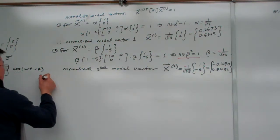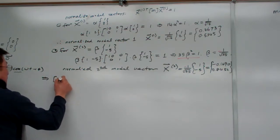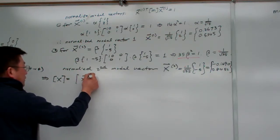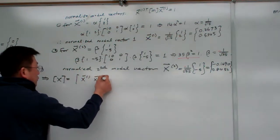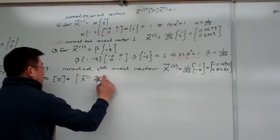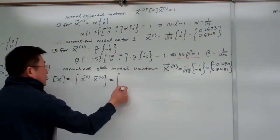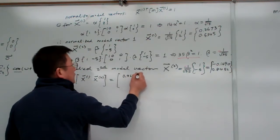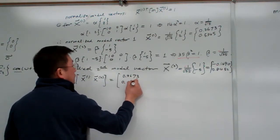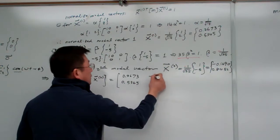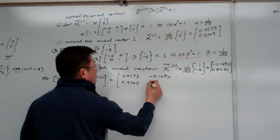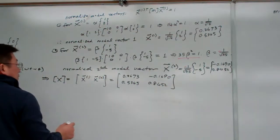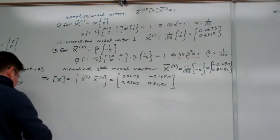So, therefore, from here, we can see the modal matrix. And it will become an arrangement of the two calculated normalized vectors. So, that one will be [0.2673, -0.1690; 0.5345, 0.8452]. So, that is the information we're going to use.